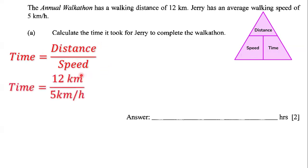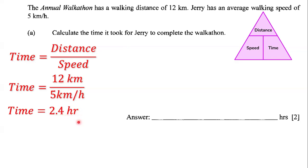What is the distance in this case? The distance is 12 kilometers, and the speed is 5 kilometers per hour. So we're going to divide these two: 12 divided by 5, which equals 2.4 hours. That means the answer is 2.4 hours — that's the time it took for Jerry to complete the walkathon.